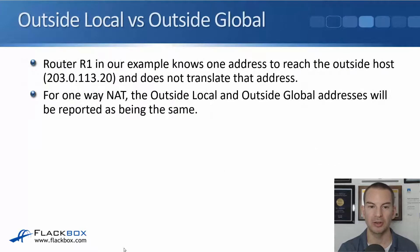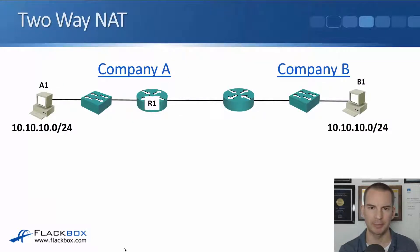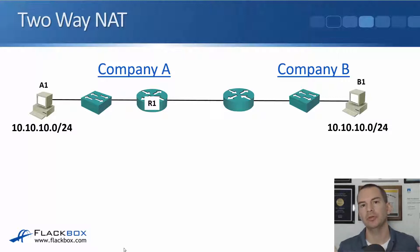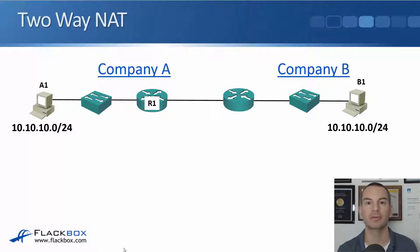So now you're probably wondering: when would the outside local and the outside global address ever be different? Here's an example — it's where we're doing two-way NAT. For the CCNA exam, you don't really need to know two-way NAT. I'm just telling you this because if I didn't, you'd be wondering about those outside addresses. You don't need to know how to configure this for the exam, but you do need to know those four definitions, and this is going to help you really understand them.